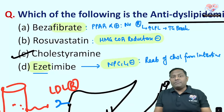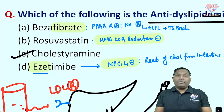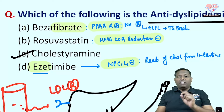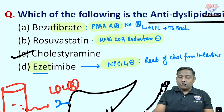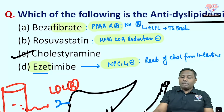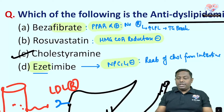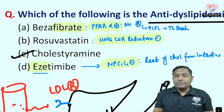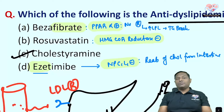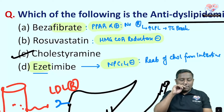To summarize the options: fibrates include fenofibrate and gemfibrozil and are PPAR-alpha agonists. Remember, PPAR-gamma agonists like pioglitazone are used for diabetes (glucose regulation), while PPAR-alpha is for lipid lowering.